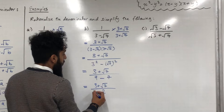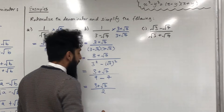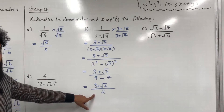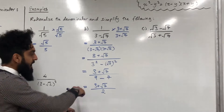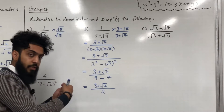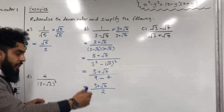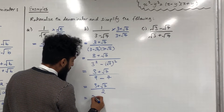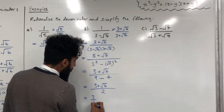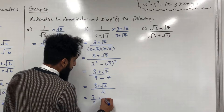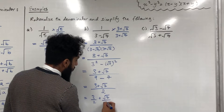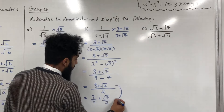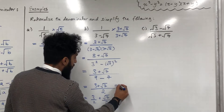Simplifying further gives us (3 + √7) over 2. An equivalent form comes from splitting this fraction into two parts: 3/2 + √7/2. These two answers are equivalent.